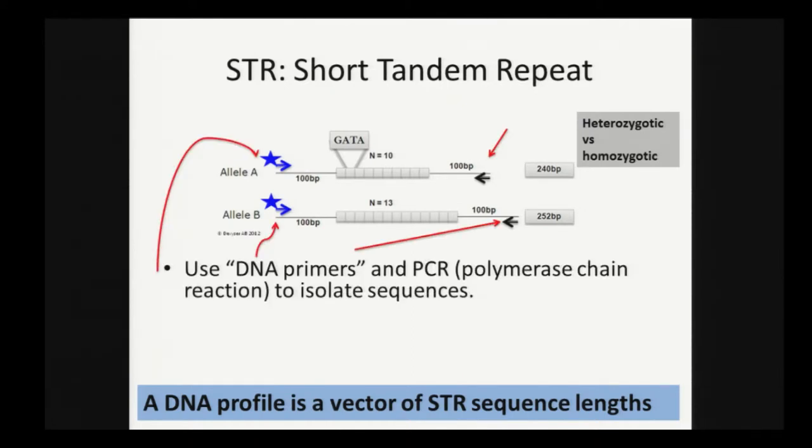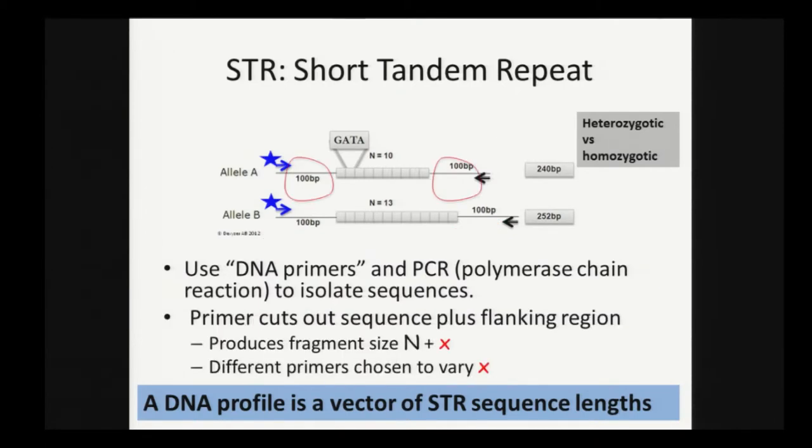How do you actually measure the length of these sequences using something called PCR and DNA primers? DNA primers are molecules that bind to the DNA molecule in regions that flank the targeted sequence. When you run this PCR reaction, you cut out the region delimited by the primers and amplify that region. You produce fragments of size n, the length of the sequence, plus some x dependent on what primer you chose.